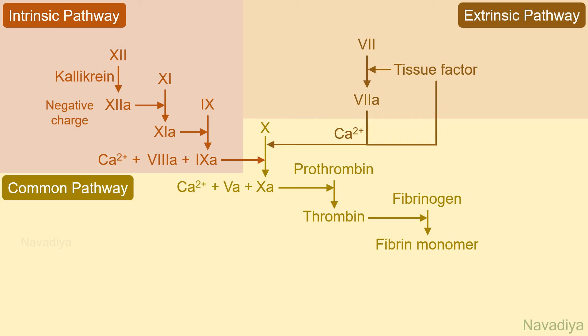Thrombin converts fibrinogen into fibrin monomers. Fibrin monomers polymerize spontaneously to form fibrin polymers. Factor 13, which is activated by thrombin, covalently crosslinks fibrin polymers and forms stable fibrin.